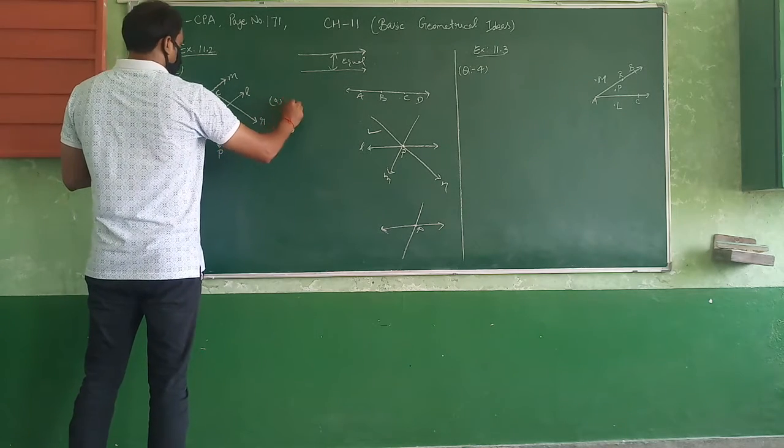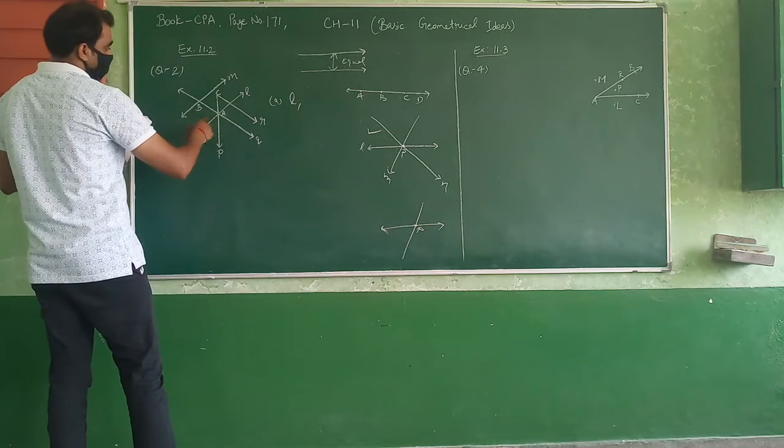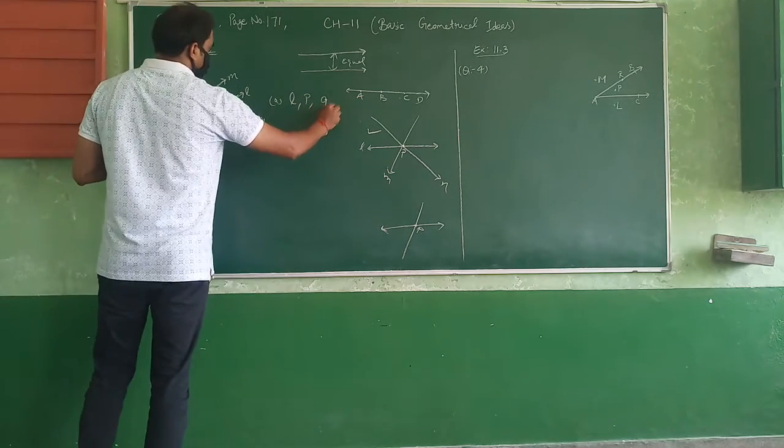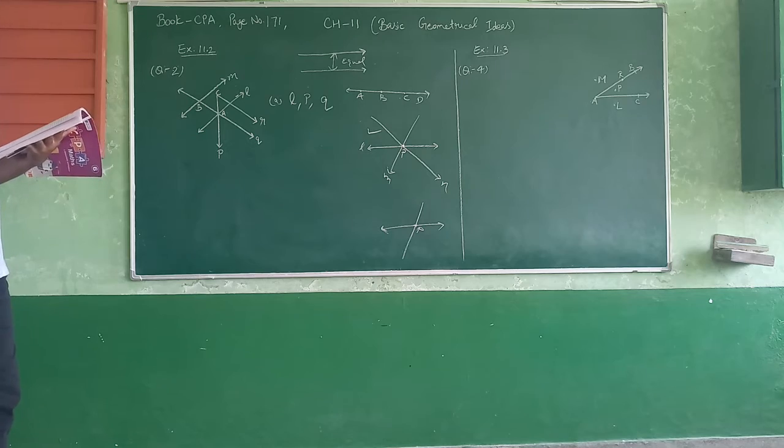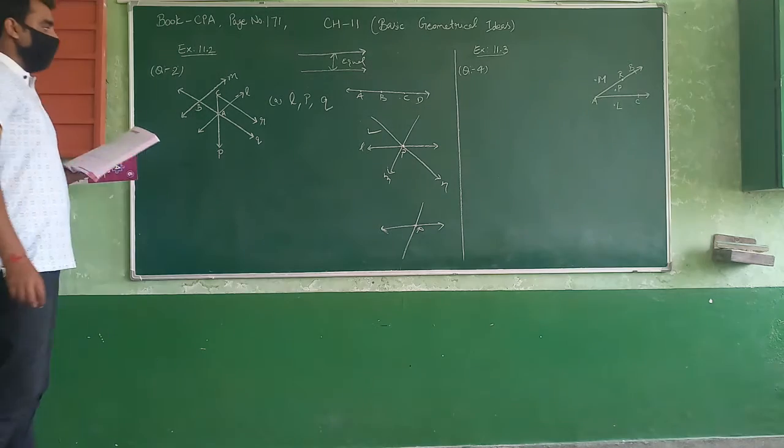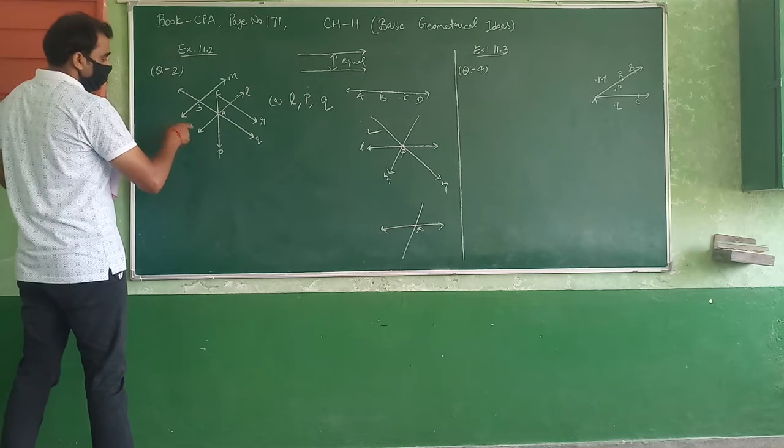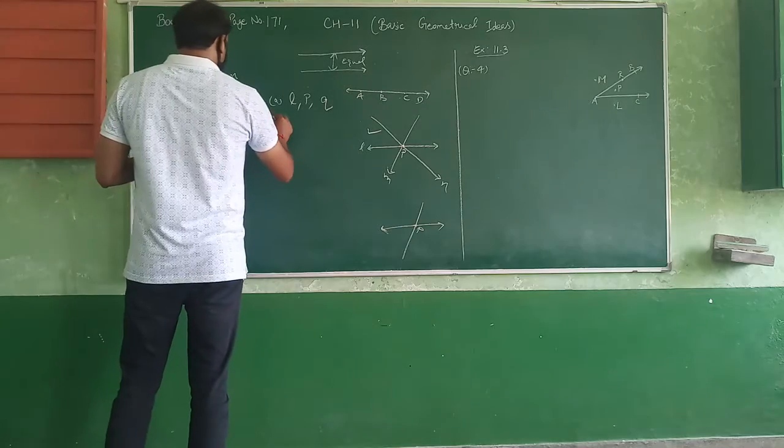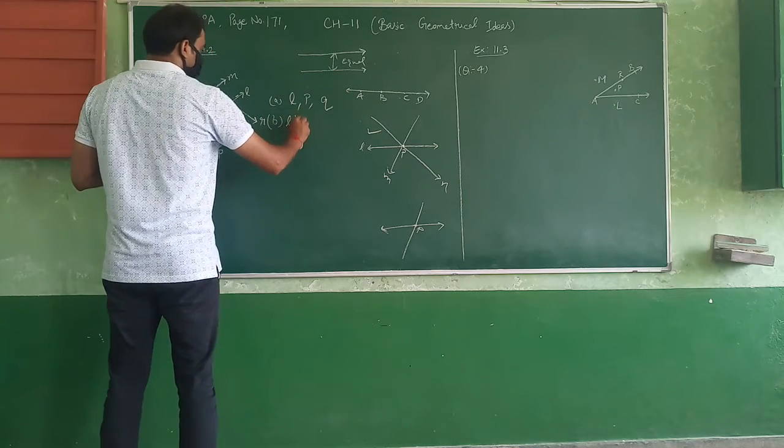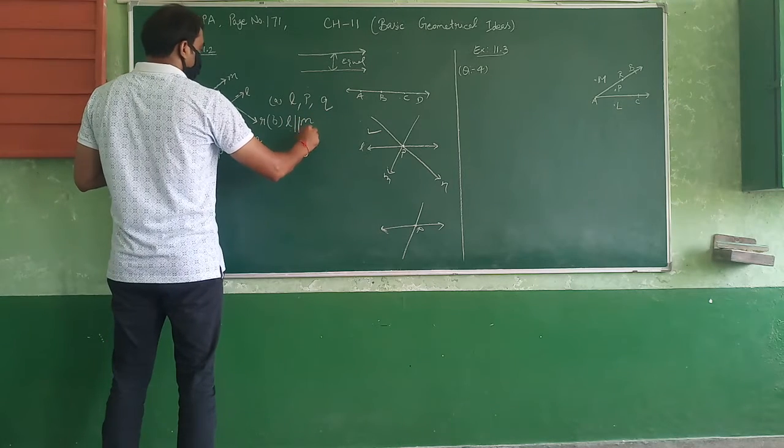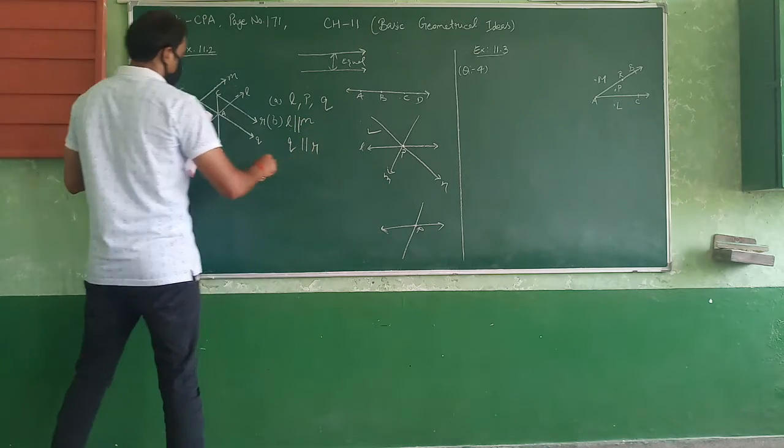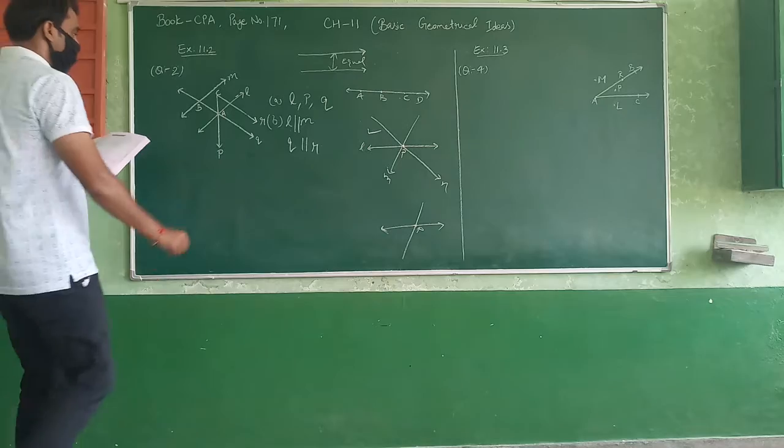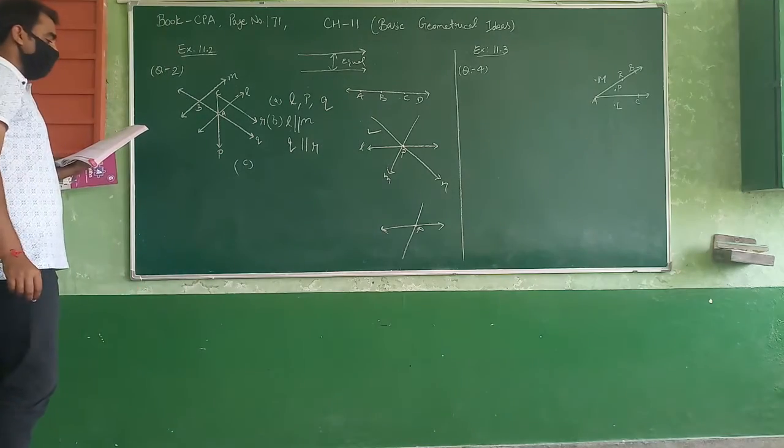So the answer is L, second is P, third is Q. Now second question: Name two pairs of parallel lines. Two pairs, so parallel lines - one is here, second is here. So the pairs are: L parallel to N, Q parallel to R.